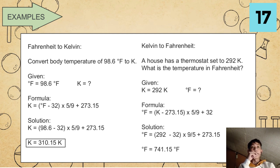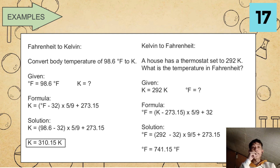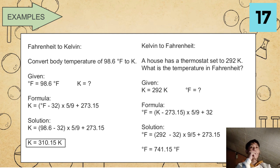We also have an example in Kelvin to Fahrenheit: a house has a thermostat set to 292 K. What is the temperature in Fahrenheit? Given: K equals 292 Kelvin, and we are finding Fahrenheit. Our formula is degrees Fahrenheit equals parenthesis K minus 273.15 times 9 over 5 plus 32. Substituting: degrees Fahrenheit equals parenthesis 292 minus 273.15 times 9 over 5 plus 32. Our final answer is degrees Fahrenheit equals 66.07 degrees Fahrenheit.